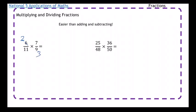So what I can then do instead is use my new numbers and just multiply that way. So 2 times 7 is 14 and 11 times 3 is 33. And there's no number that's going to simplify that any further.